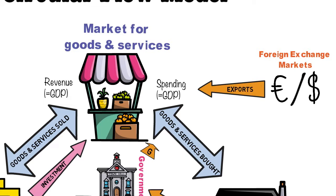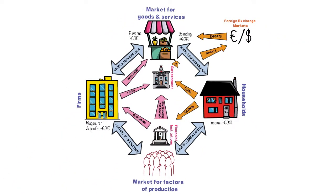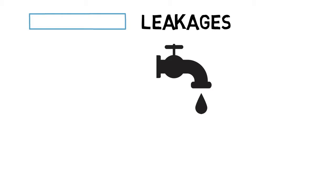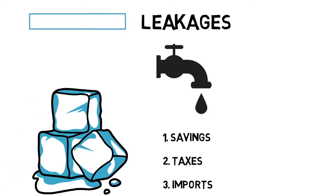Exports are an injection into the economy because money is coming in — people from outside the economy are paying for our goods and services. We also have leakages in terms of imports, where we spend money that leaves the country. Any economy is based on a balance of these injections and leakages — money coming into and flowing out of the economy all the time. The three items that constitute leakages out of the economy are savings from households, taxes from the government, and imports in terms of trade.